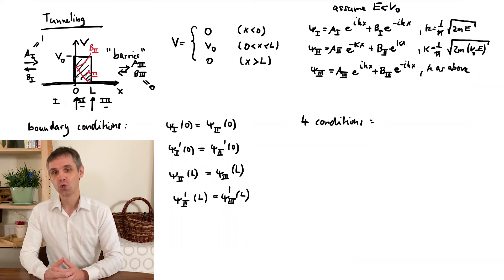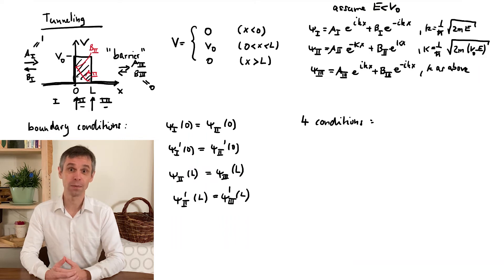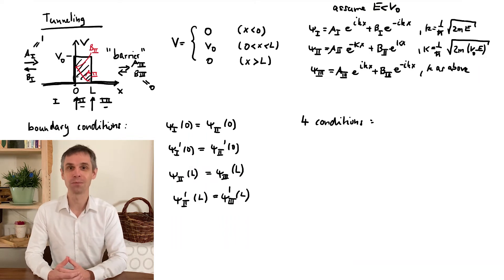So the particle definitely arrives from the left, with an amplitude fixed to a value that simplifies our expressions for the transmission and reflection probabilities.